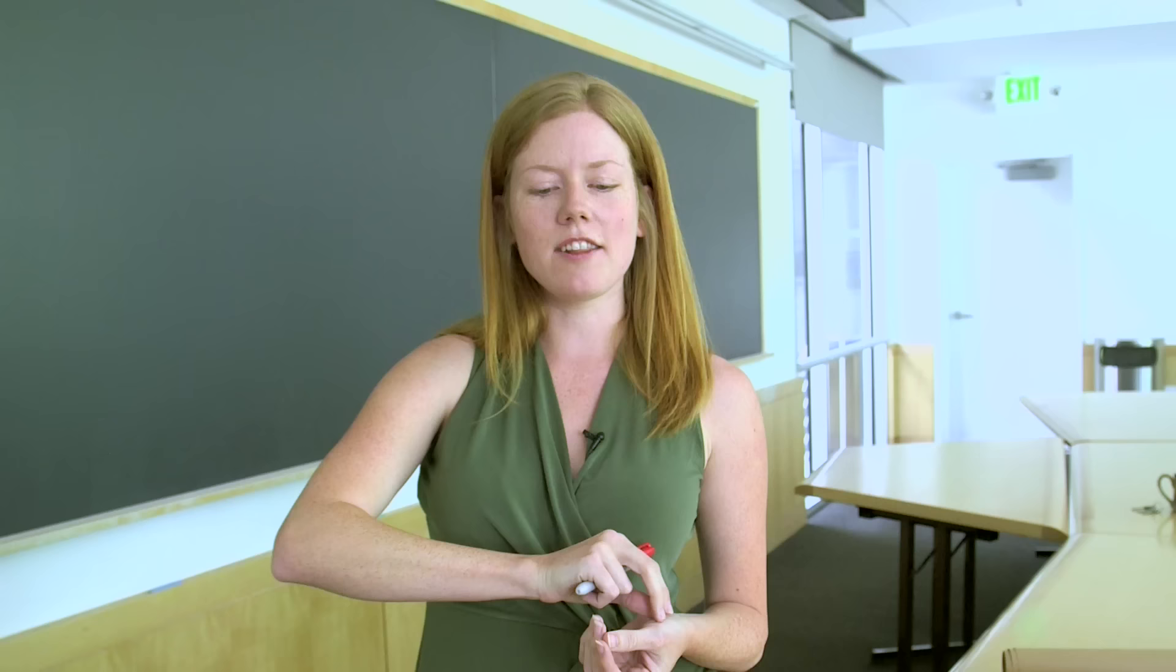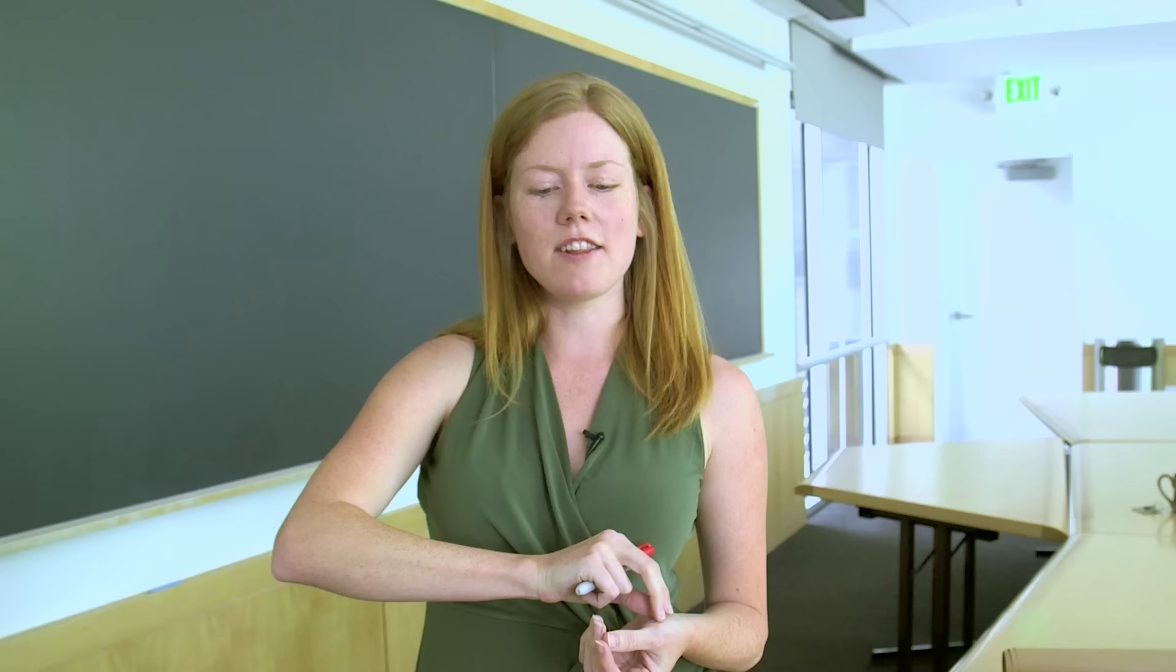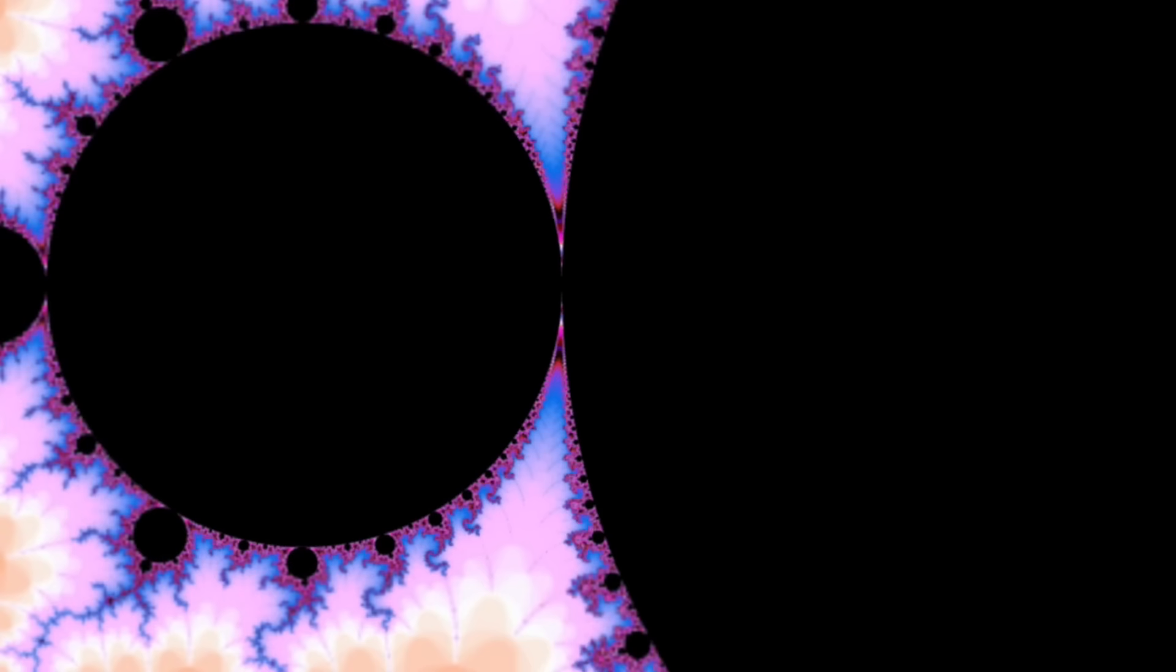If you want to draw a picture of whether C is in the Mandelbrot set or not, you just start iterating zero under z squared plus C. If it takes a long time to get big you can give it one color. If it gets big really quickly you can give it a different color, and that's how you get these shadings.